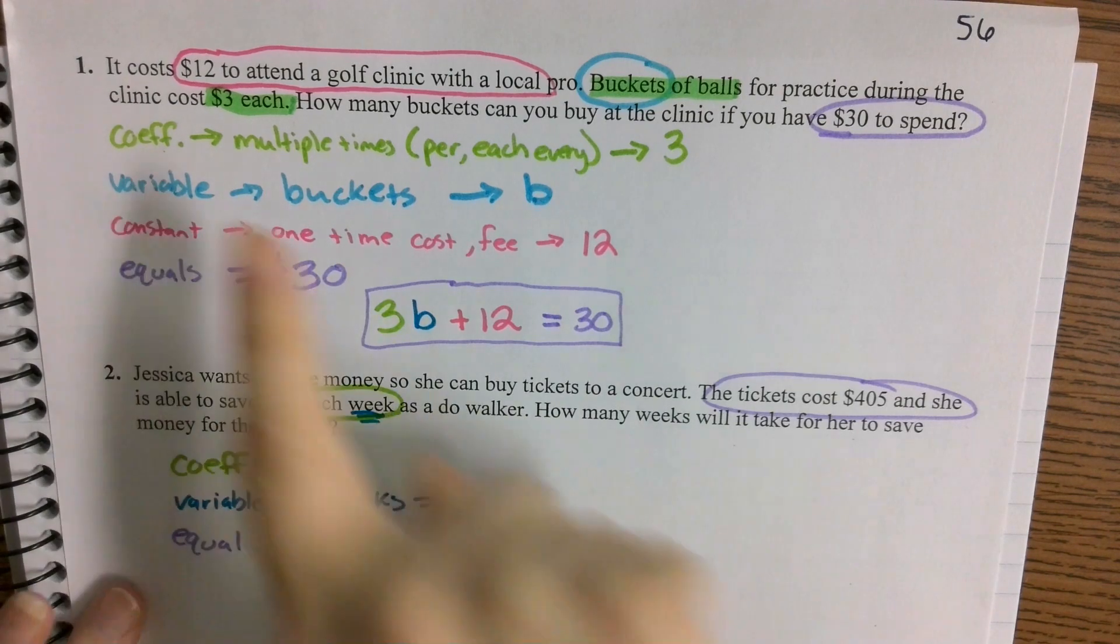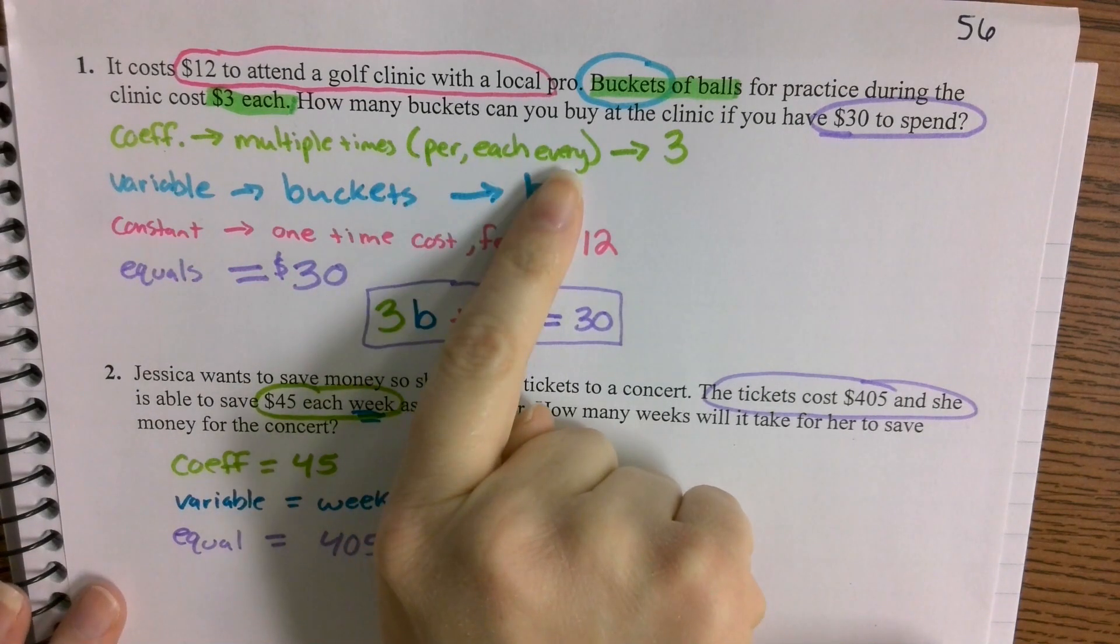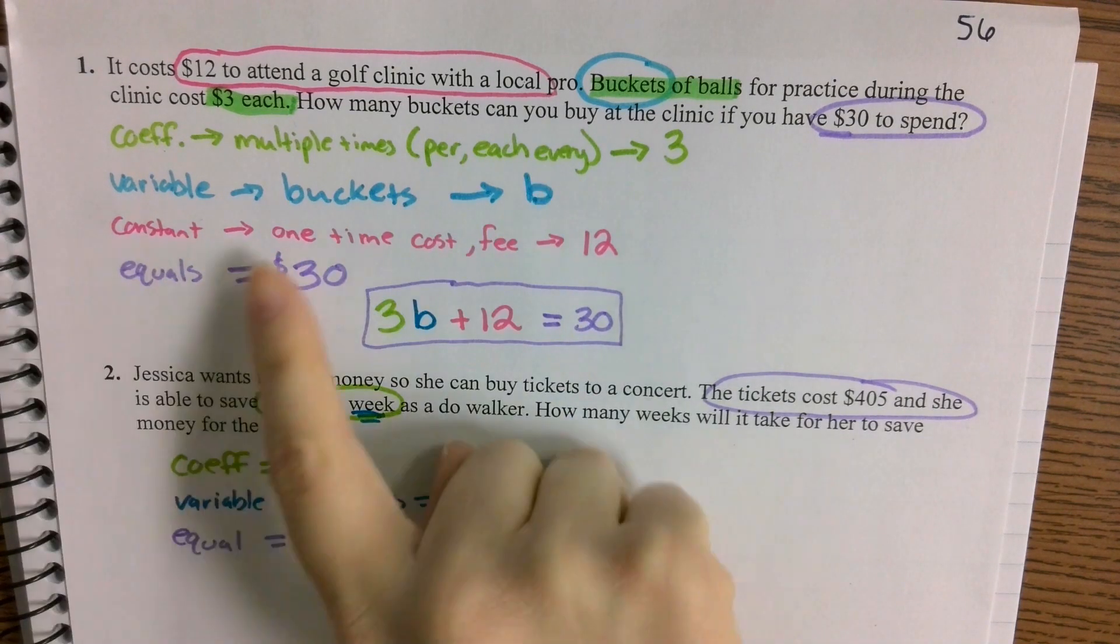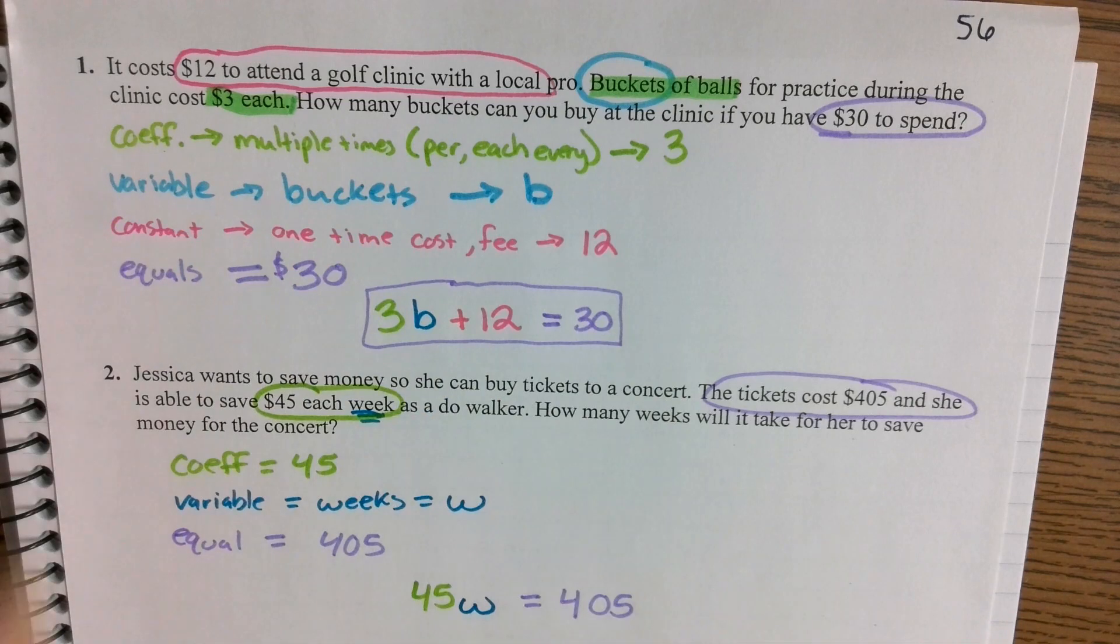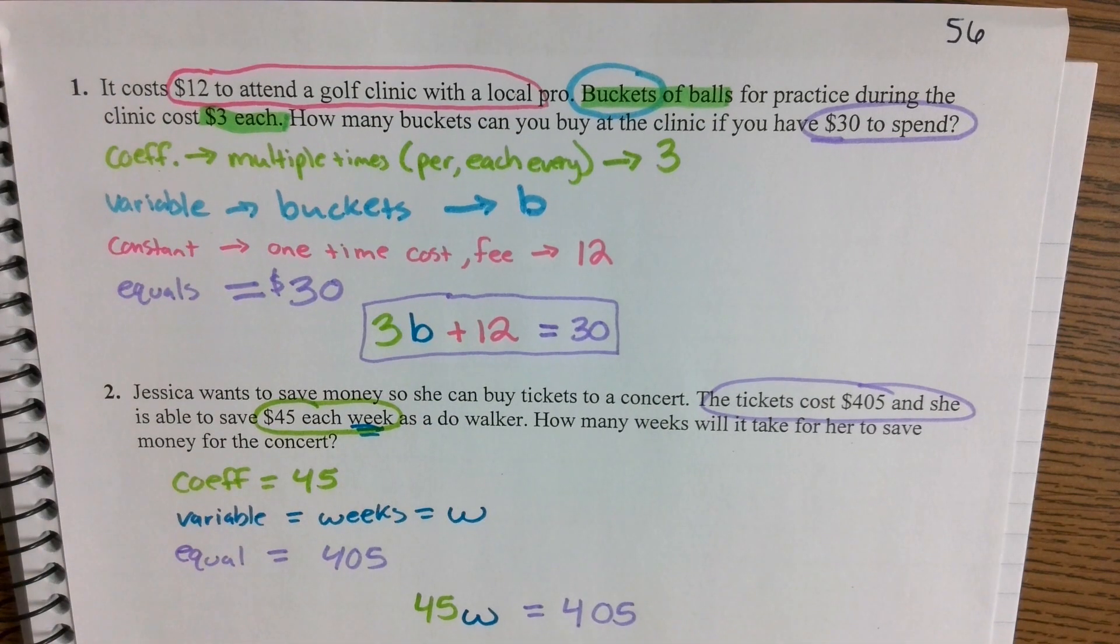So we noticed that the coefficient has those key terms per, each, and every. We know that a constant is typically a one-time cost or a one-time value, a one-time fee. Your variable is usually attached along with the coefficient with that per, each, and every.